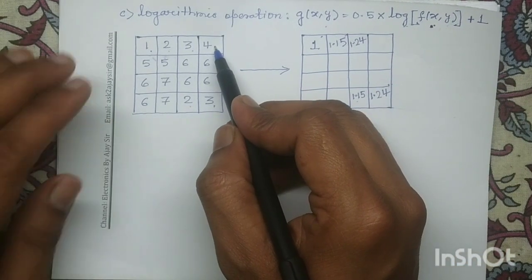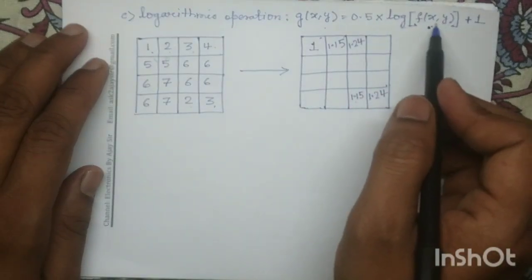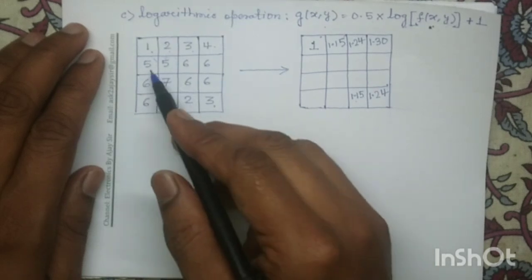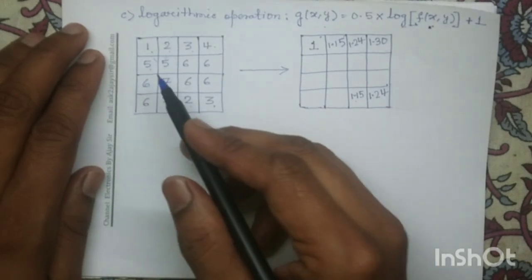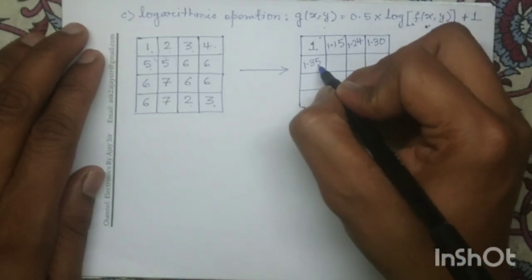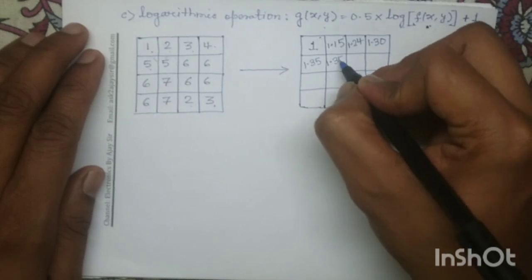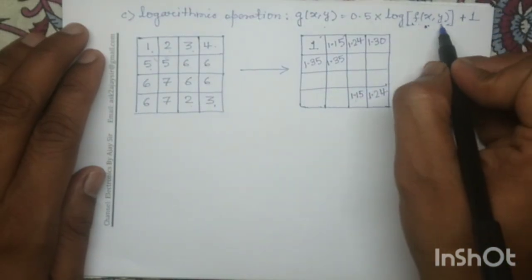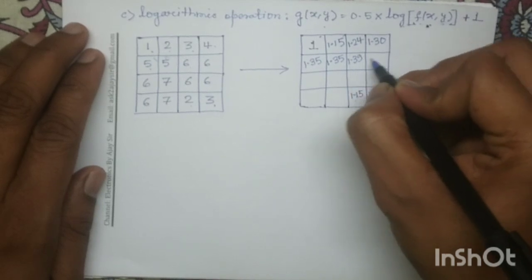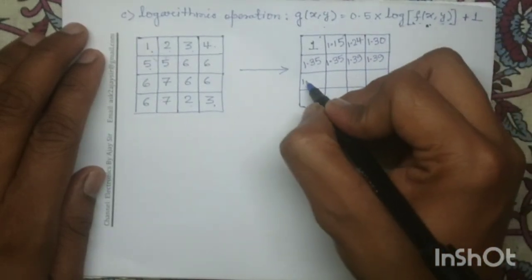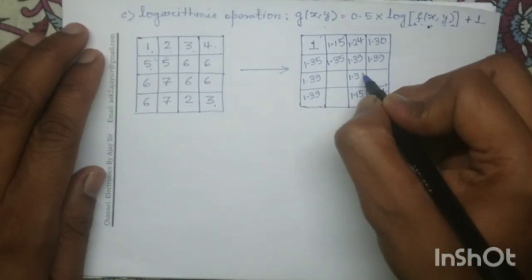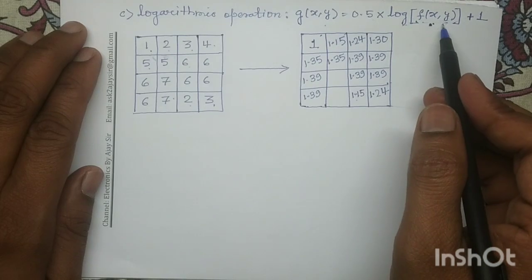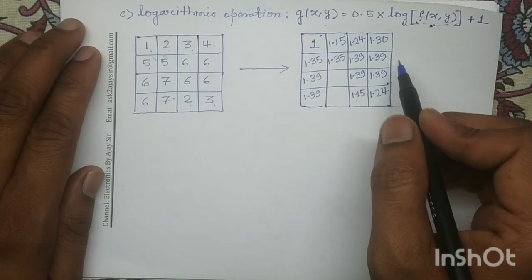For pixel intensity level 5, g(x,y) is 1.35; here also I write 1.35 since this pixel also has intensity level 5. For pixel intensity level 6, substituting fxy equals 6, g(x,y) is 1.39. Here also I write 1.39, 1.39, 1.39, 1.39, and 1.39. The two pixels having intensity level 7: substituting fxy equals 7, the value of g(x,y) is 1.42.